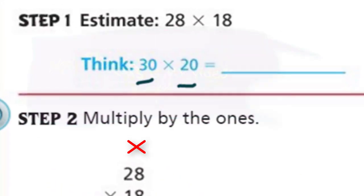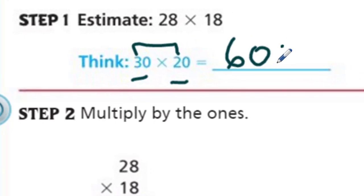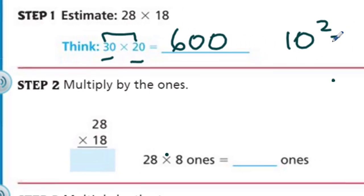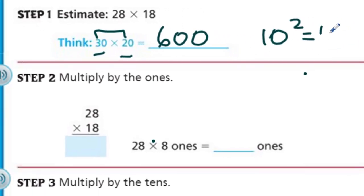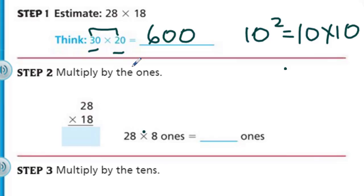And that's what an estimate is. So we take our simple facts: 3 times 2 is 6. We have 2 powers of 10 — 10 raised to the second power means 10 times 10. So I put my 2 powers of 10, and our estimate is going to be 600. So our answer should be right around 600.